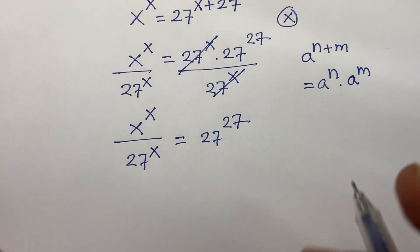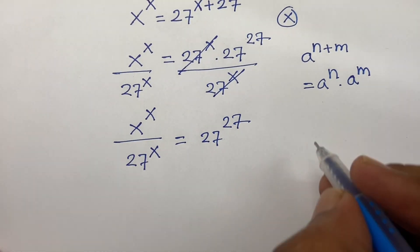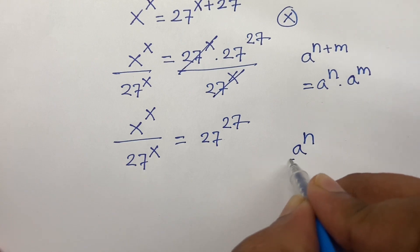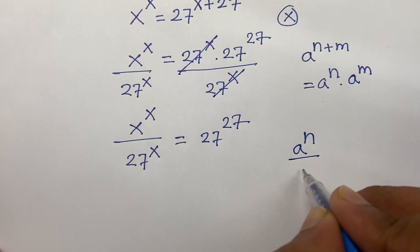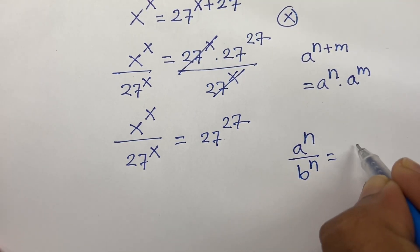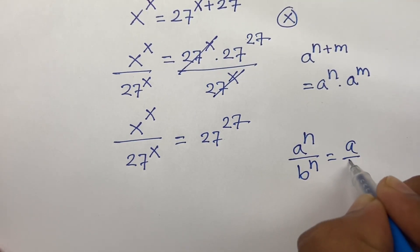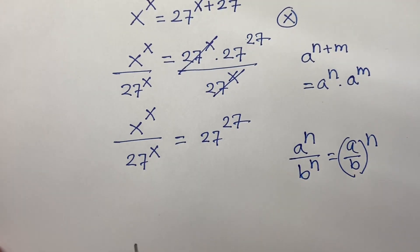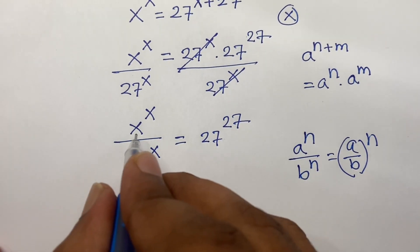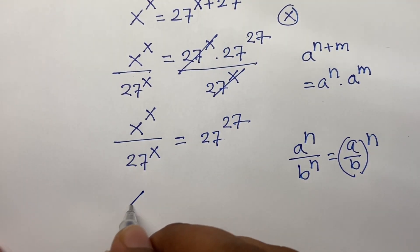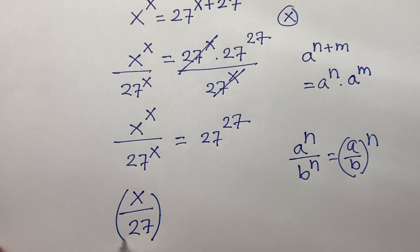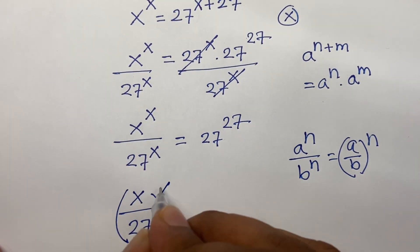According to the rule, a^n over b^n equals (a/b)^n. Following this rule, x^x over 27^x becomes (x/27)^x, so we have (x/27)^x equals 27^27.